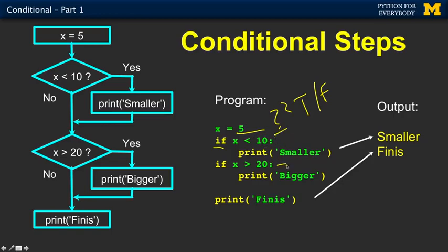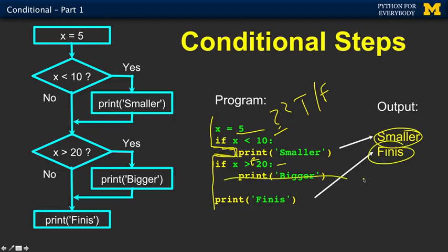If statements end in a colon and they start an indented block of text. It's kind of like an outline that says: if this is true, do this statement; otherwise, skip the statement. So in this case, x is less than 10, so it does the statement. Then it checks if x is greater than 20 — that evaluates to false, so it skips it. That's why we see 'smaller' printout and 'finite' printout, and that line never executes.